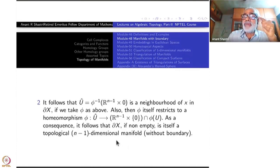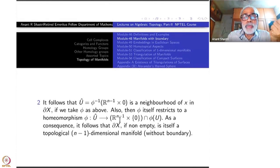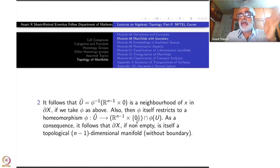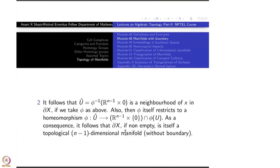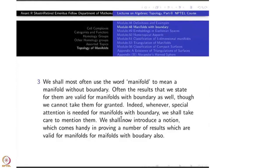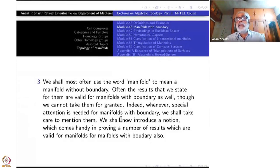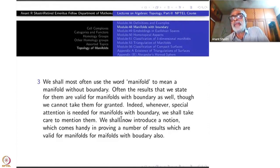And that manifold — the boundary of X — will not have any boundary itself. Because now everything is inside open R^{n-1}. R^{n-1} cross {0} is homeomorphic to R^{n-1}, not H^{n-1}. So they will all be in the interior of this manifold. Therefore, boundary of a boundary is always empty.